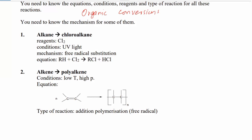So we have the alkane — it becomes a chloroalkane, you can say alkyl halide as well. How does it happen? There is a type of reaction which is called free radical substitution, and you would have studied at AS level that there is a first step called initiation, where chlorine molecules convert into chlorine free radicals.